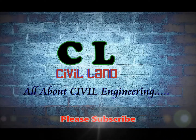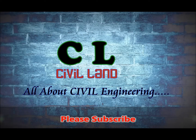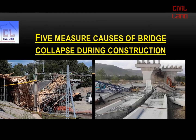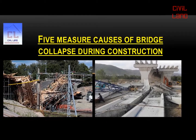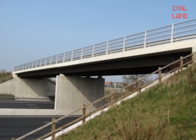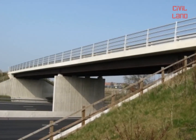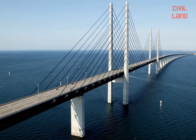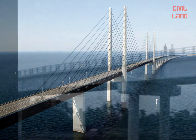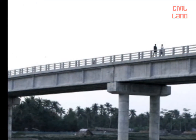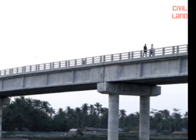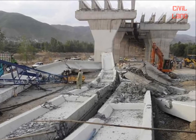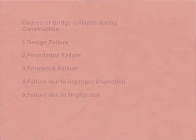Hi friends, this is Prabhash and you are welcome to my channel. In this video we will discuss about five major causes of bridge failure during construction. Bridges are the crucial transportation link that carry road and rail traffic across rivers, gorges, or other roads. Bridge construction is a massive and expensive engineering project. When a bridge collapses, it can cause massive traffic problems as well as loss of lives.